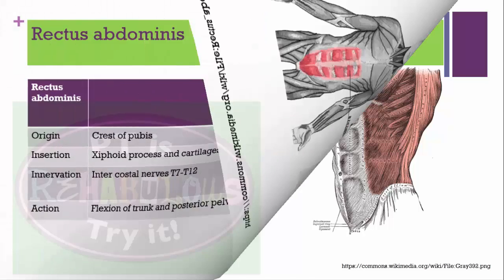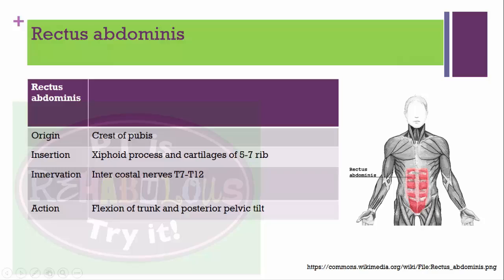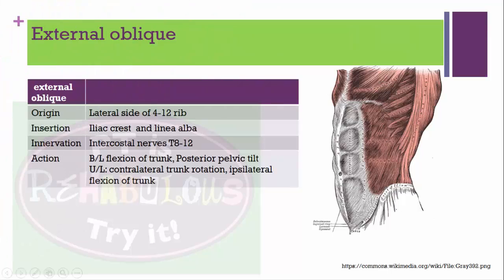Rectus abdominis muscle: originates from the crest of the pubis and inserts into the xiphoid process and the cartilage of the fifth to seventh rib. Innervation from intercostal nerve T7 to T12. Action: flexion of the trunk and posterior tilt of the pelvis. External oblique muscle: originates from the lateral side of ribs 4 to 12 and inserts into the iliac crest and linea alba. Innervated by intercostal nerve T8 to L2.